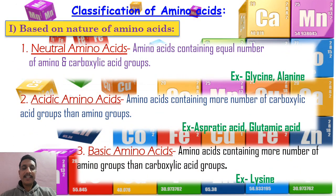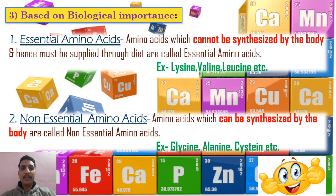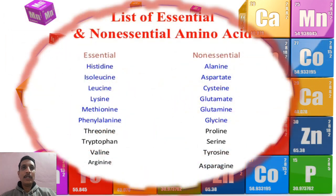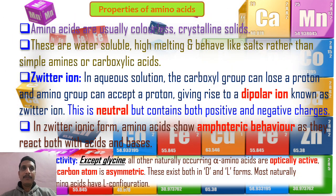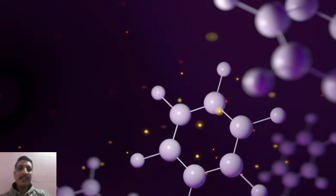We discussed classification of amino acids: based on nature into neutral, acidic, and basic amino acids; based on structure into aliphatic, aromatic, and heterocyclic; and based on biological importance into essential and non-essential amino acids. We also studied properties of proteins — the zwitterion property and optical activity property. That is the previous class glance.